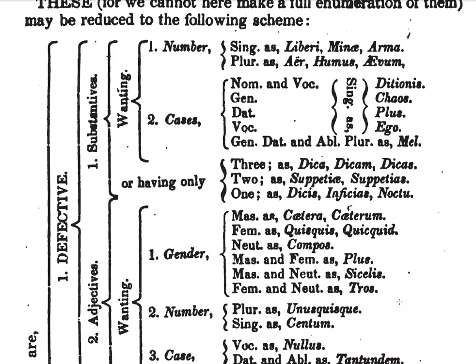And the genitive, dative, and ablative plural, as in mel. Then we have those that are defective substantives lacking cases — or having only three, as in deca, decam, decas; or having only two, as in suppetiae and suppetias; and having only one, as in decis, and inficias, and noctu.